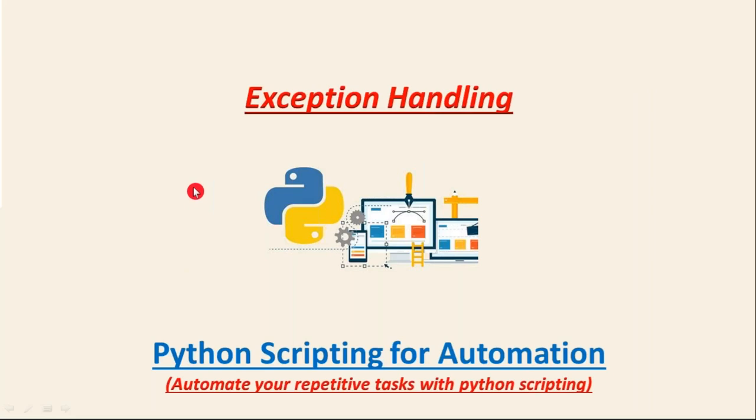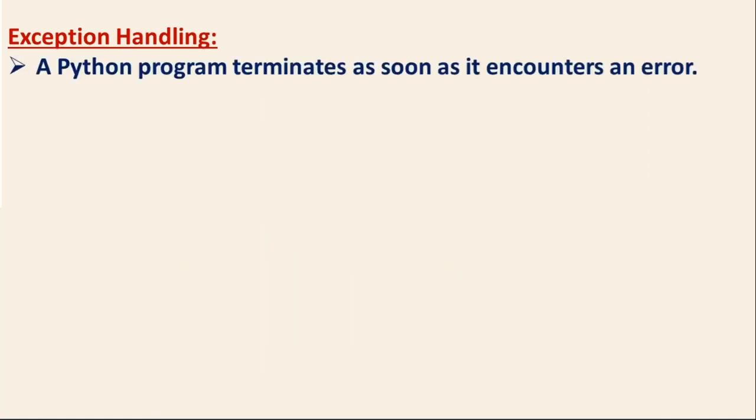Here we are going to discuss about exception handling in Python. First of all, what is an exception? Simply, an exception is nothing but an error. A Python program or script terminates as soon as it encounters an error. Assume that you have 10, 100, or thousands of lines in your Python script. Maybe you have somewhere in your code an error. If that error is encountered by Python, then your script will stop and terminate.